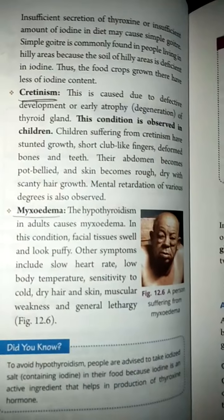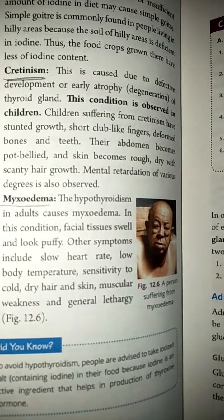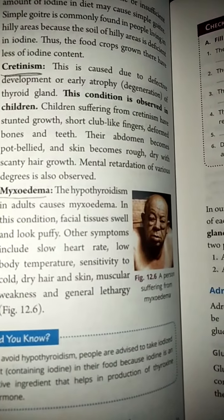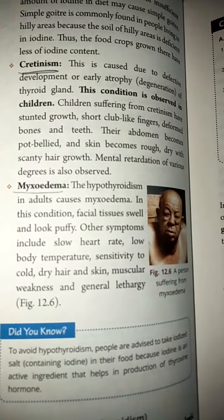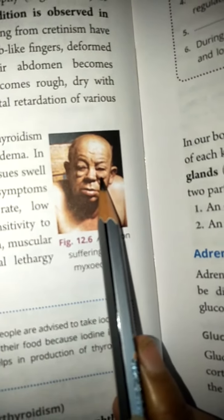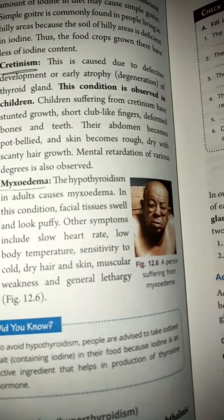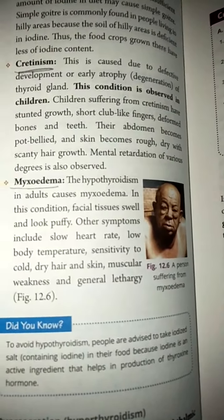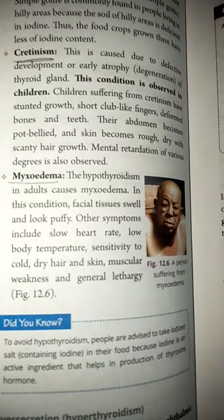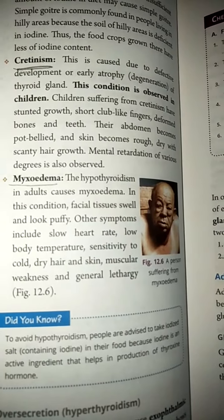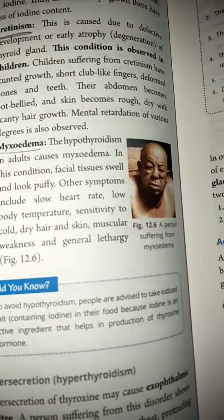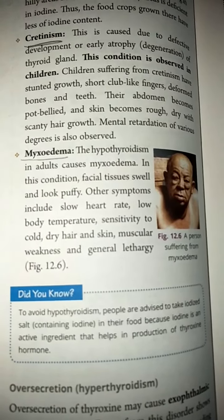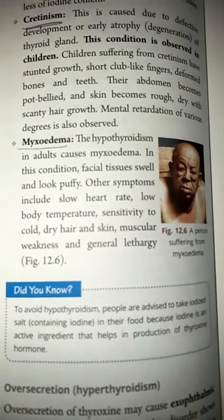The third disorder is myxedema, also called hypothyroidism. This condition occurs in adults. In myxedema, facial muscles and tissues become swollen with a puffy appearance. Other symptoms include slow heart rate, low body temperature, cold dry skin, muscular weakness, and general lethargy. So if there is undersecretion, there are three types of disorders: simple goiter, cretinism, and myxedema.